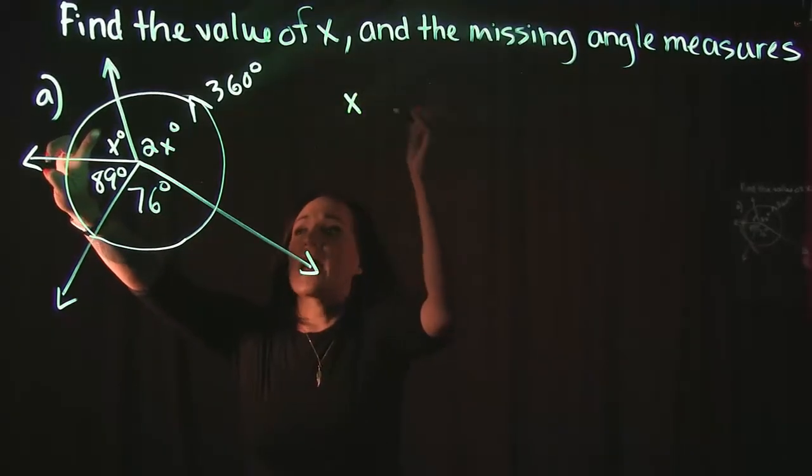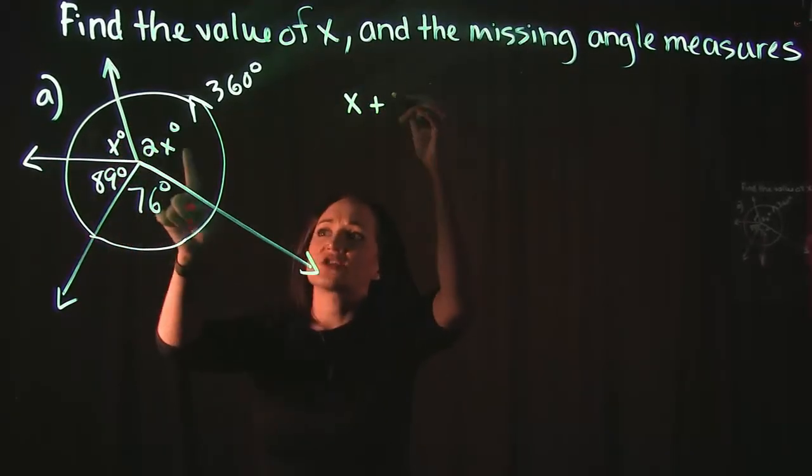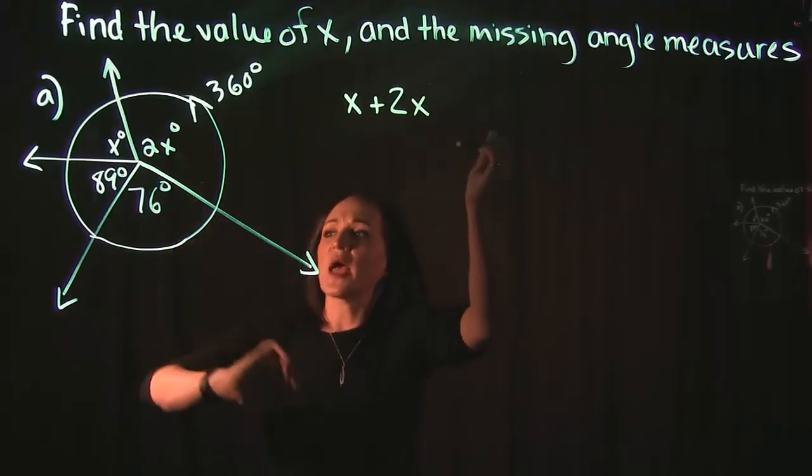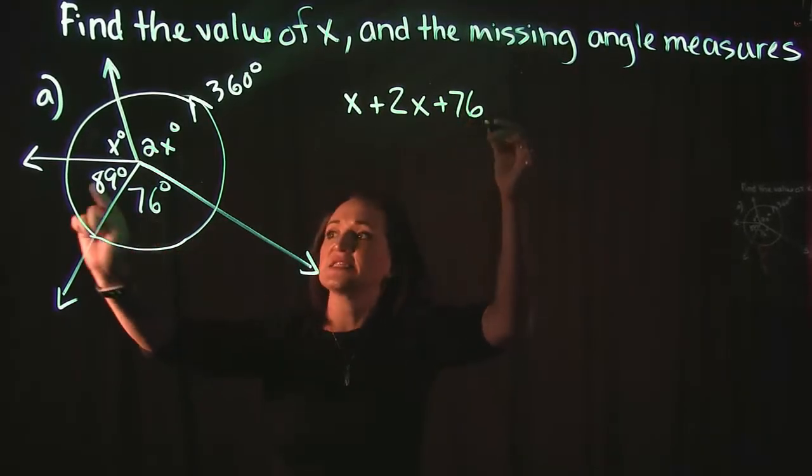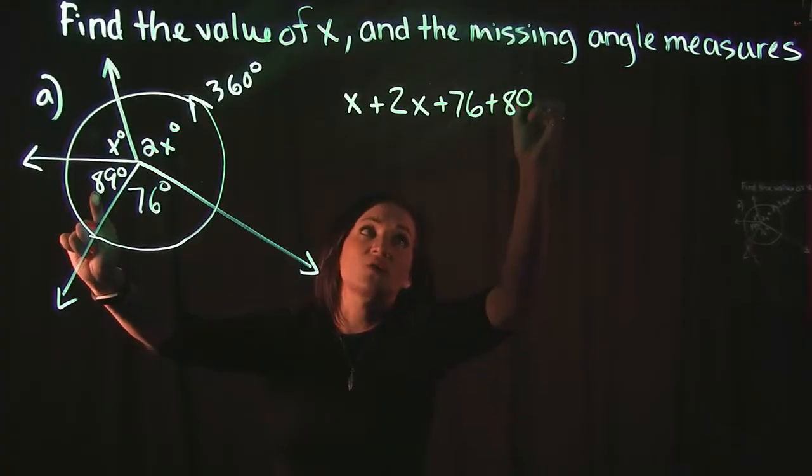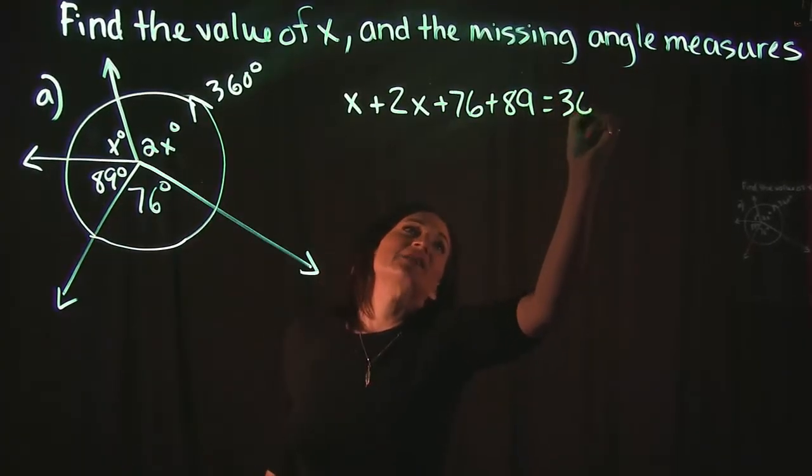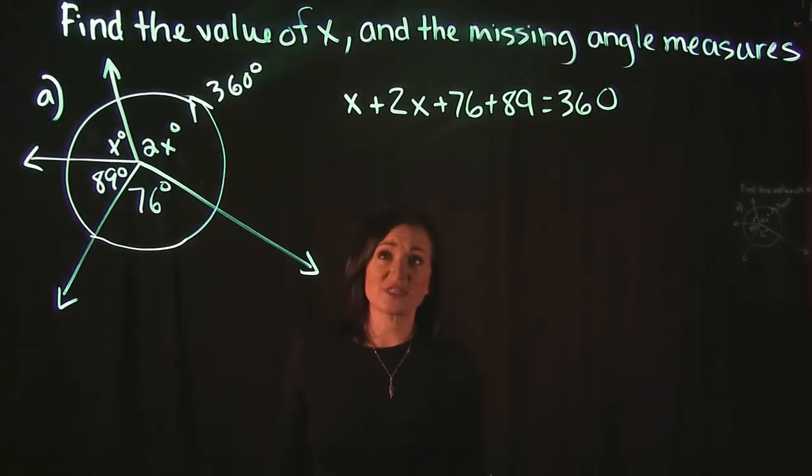So our first angle is x. So we're going to add that to our second angle, which is 2x. Our third angle, let's say, is 76, and our fourth angle is 89, and that's going to equal 360 degrees.